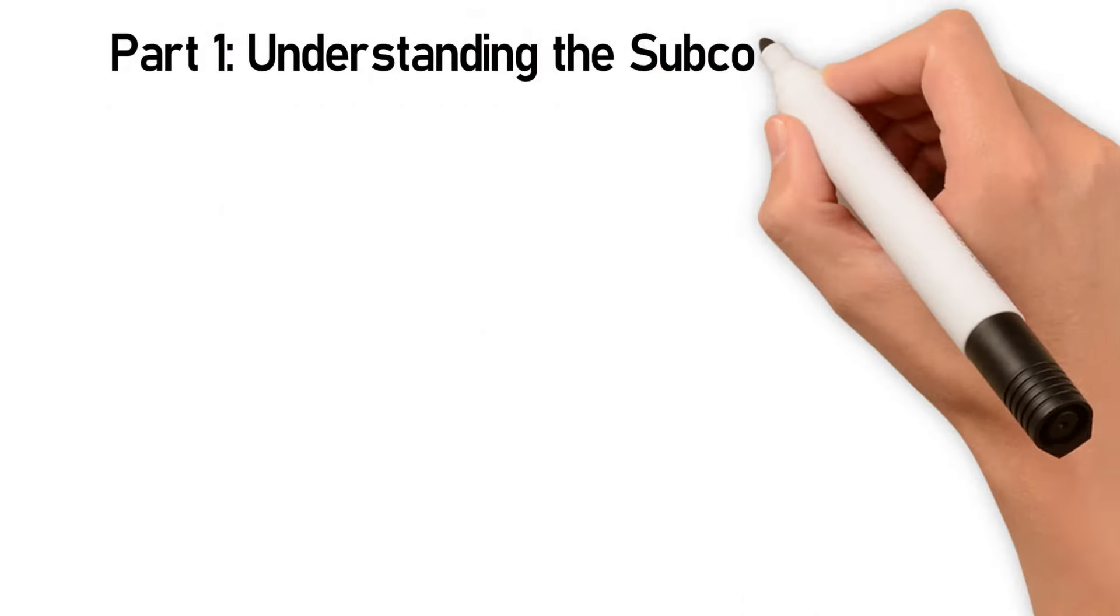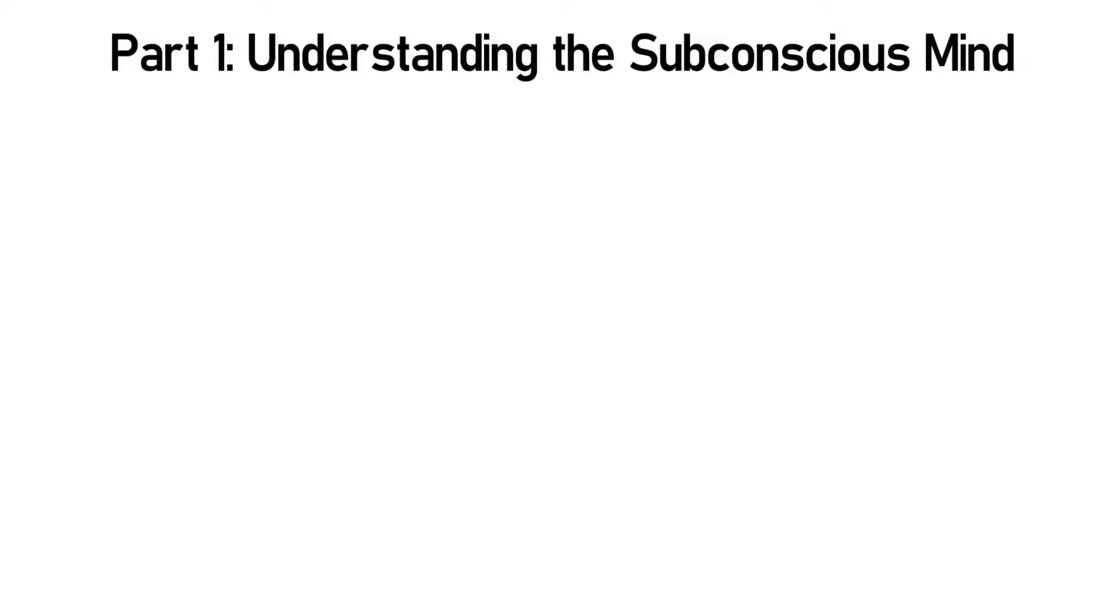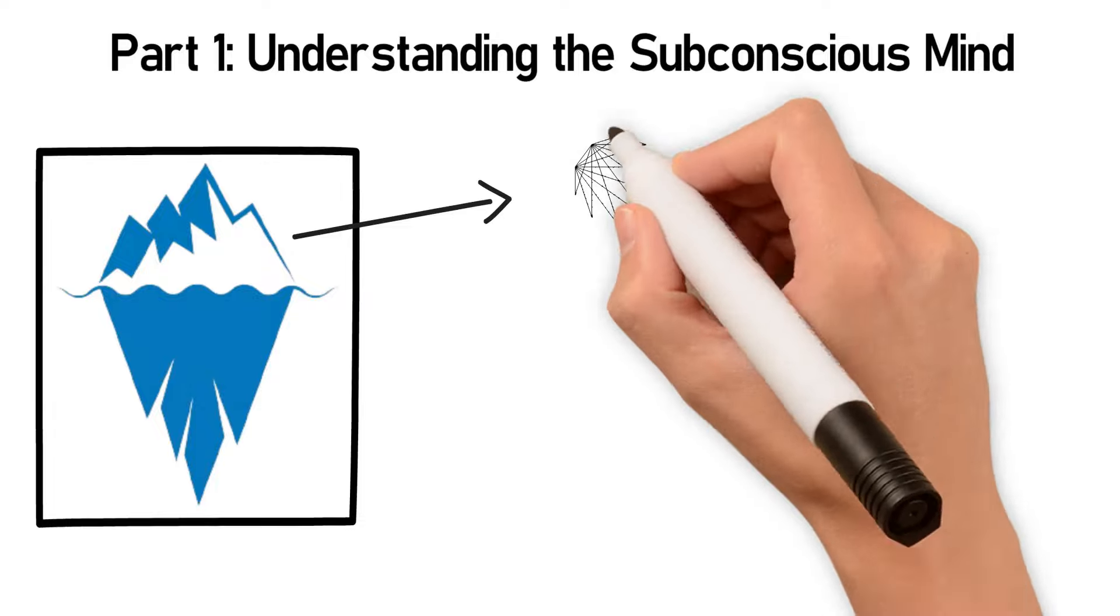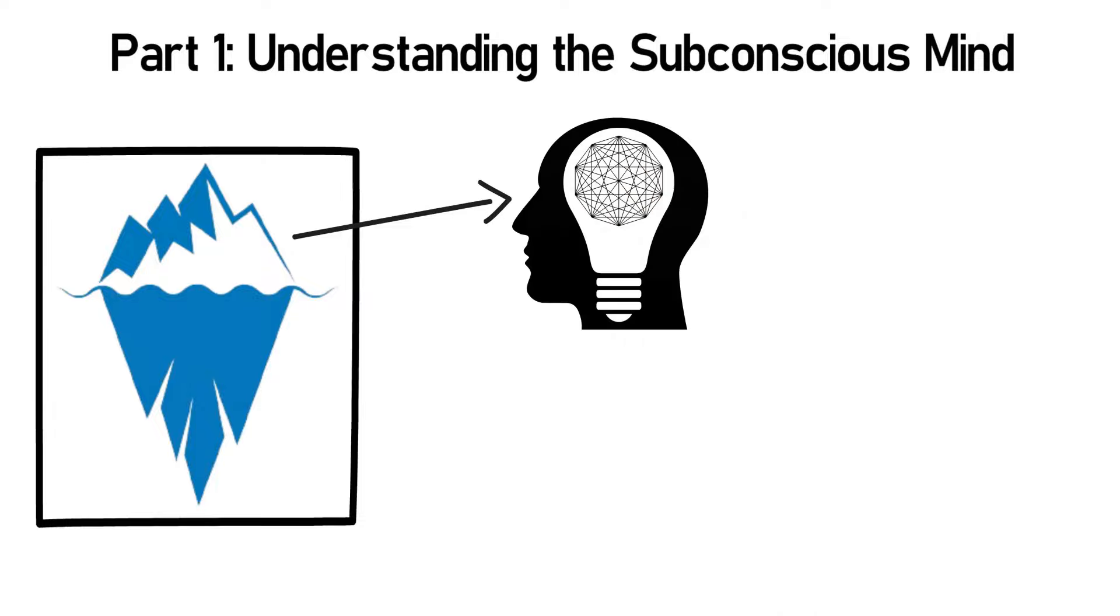Part 1: Understanding the Subconscious Mind. Picture an iceberg. What you see above the water is just a small part of a much larger whole. This is much like your mind. The visible part, the iceberg above the water, represents your conscious mind.